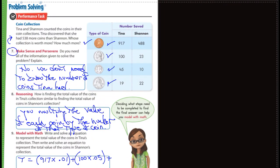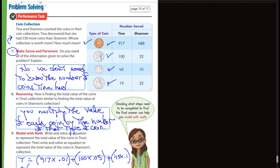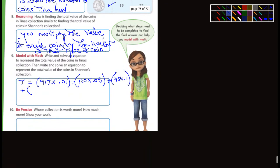Plus 45 dimes, and that's going to be times 0.1. Plus, how many quarters did she have? Nineteen quarters. Plus 19 times 0.25 because 0.25 is a quarter. And equals. Then you guys got to do the same thing with Shannon.